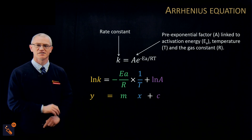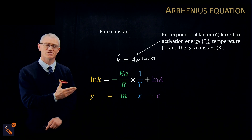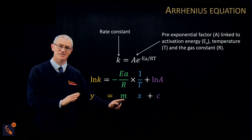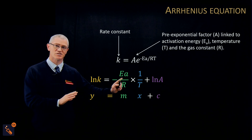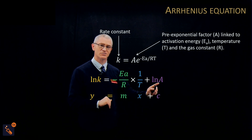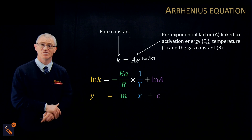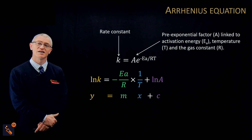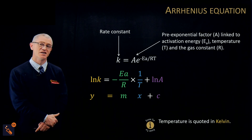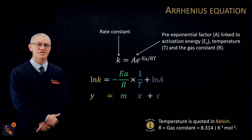So 1/T equals x, and the natural log of k is your y. If you know T and your k values, you can plot the equation. From that, your gradient m is equal to −Ea/R, and your intercept is the natural log of A. That means we can work out both the pre-exponential factor and the activation energy. One important tip: temperature must be in Kelvin — you'll usually be given degrees Celsius and must convert. The gas constant R is on the data sheet.